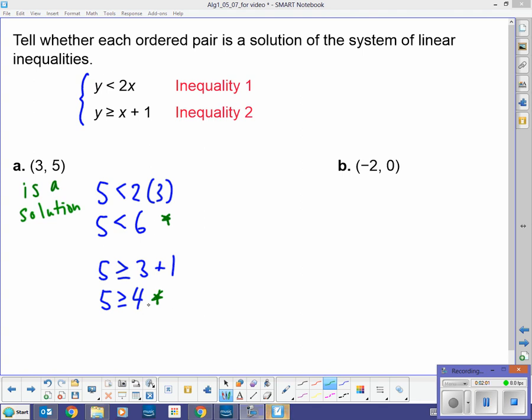That's how I show work here. Boy, so important. Second one, negative 2, 0. Let's go ahead and try that in the same set of linear inequalities. So, 0 is less than 2 times negative 2. So, 0 is less than negative 4. That's a true statement. That's a false statement. I'm sorry. That's false.